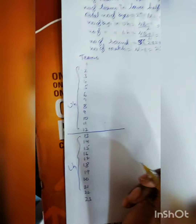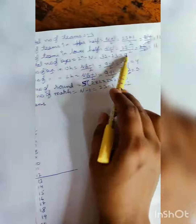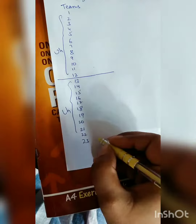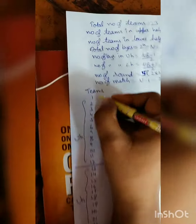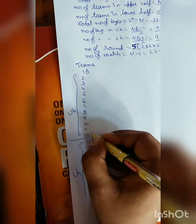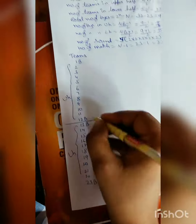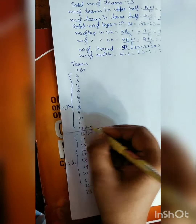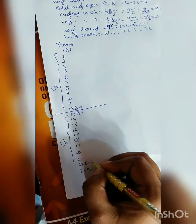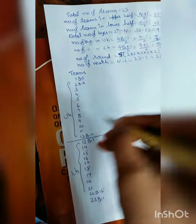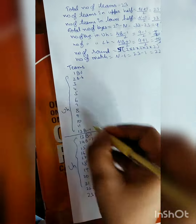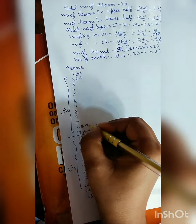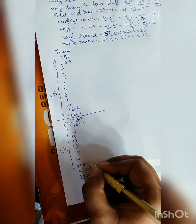After placing upper and lower halves, we will place byes. Total byes is 9. First bye goes to the bottom — 1. Second bye goes to the top. 3rd bye here, 4th bye here. After placing 4 byes: 1, 2, 3, 4. Then 5th bye here, and continuing: 5, 6, 7, 8, and 9.